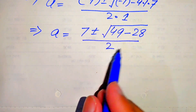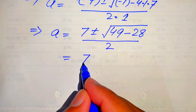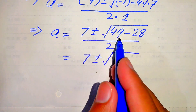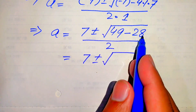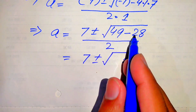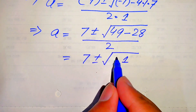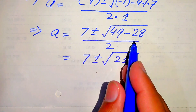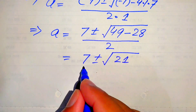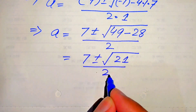Subtracting these values: 49 minus 28 equals 21. So A equals 7 plus or minus square root of 21, divided by 2.